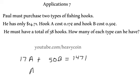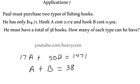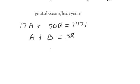The total number, so the number of hooks of A plus the number of hooks of type B is going to be equal to 38. I'm going to solve for B in this problem here: 38 minus A.